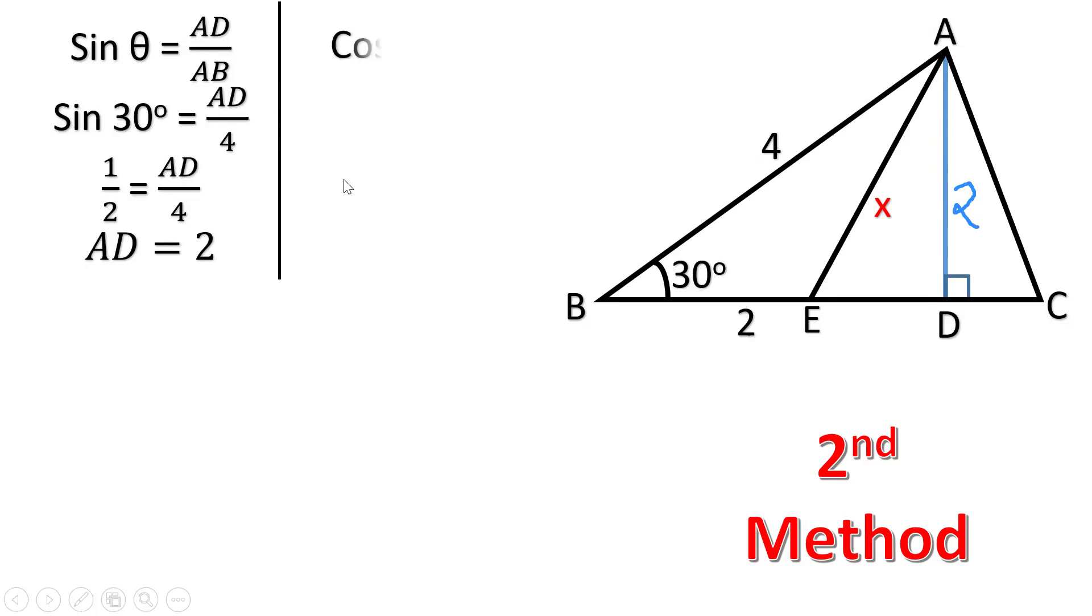Moving ahead, cos 30 in the same triangle ABD. Root 3 by 2 equals BD by 4, therefore BD is 2 root 3. So the whole side BD is 2 root 3.